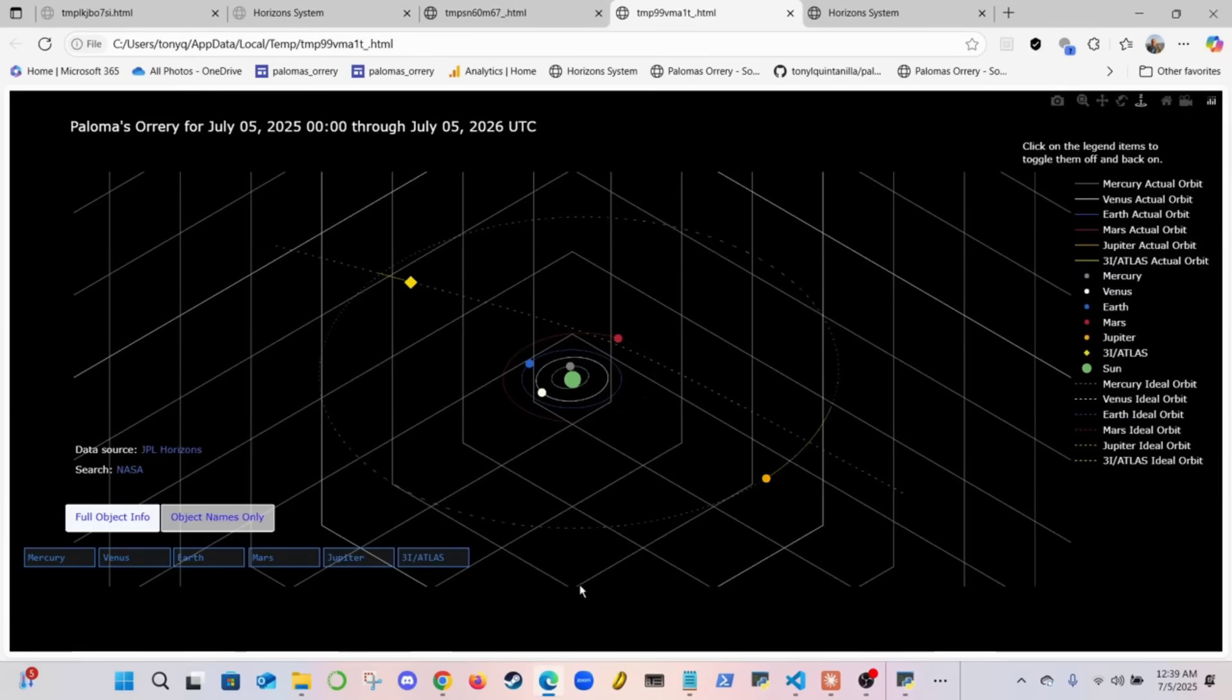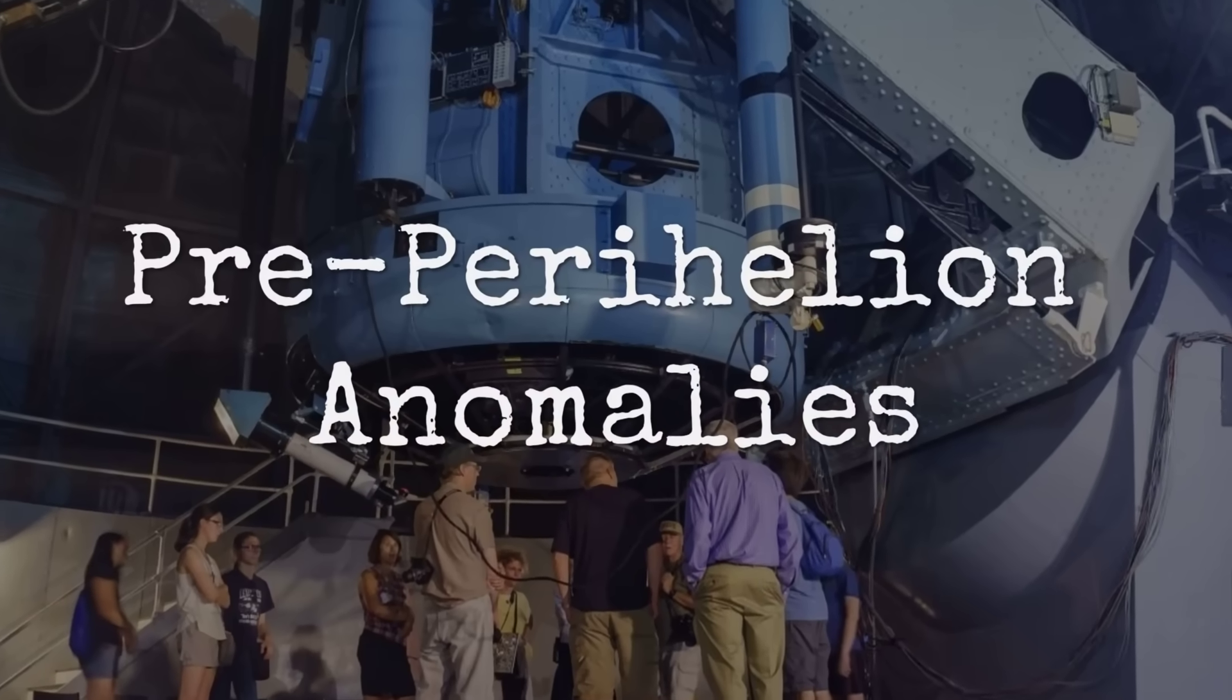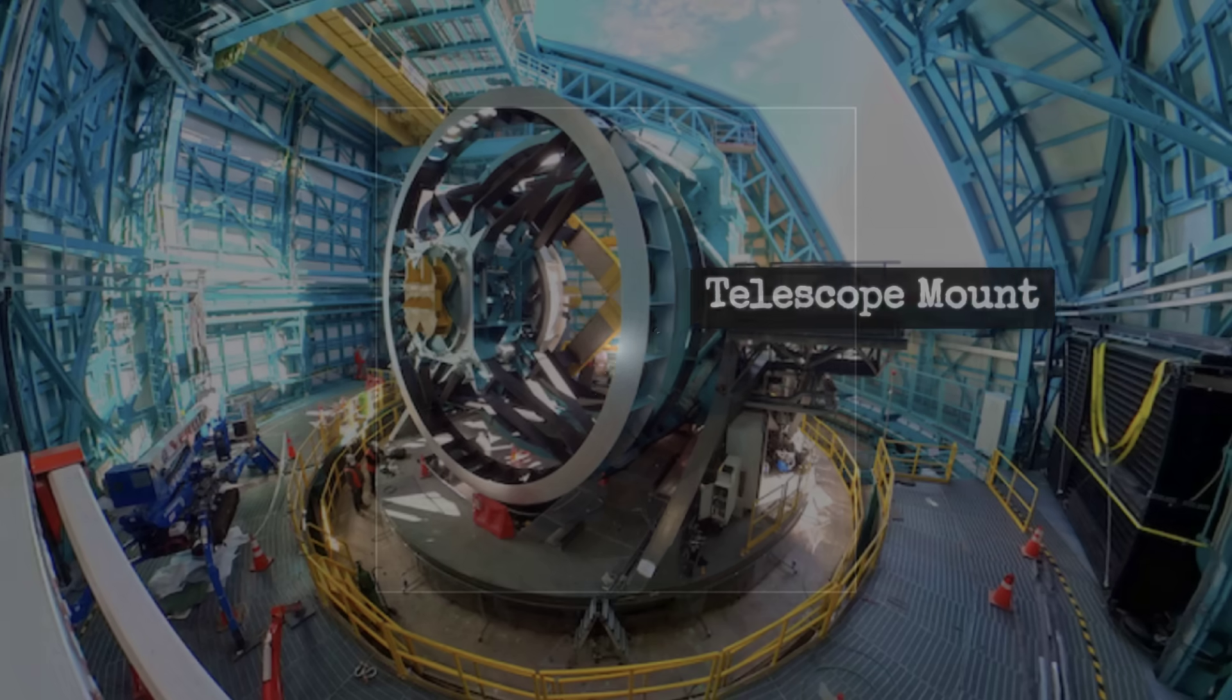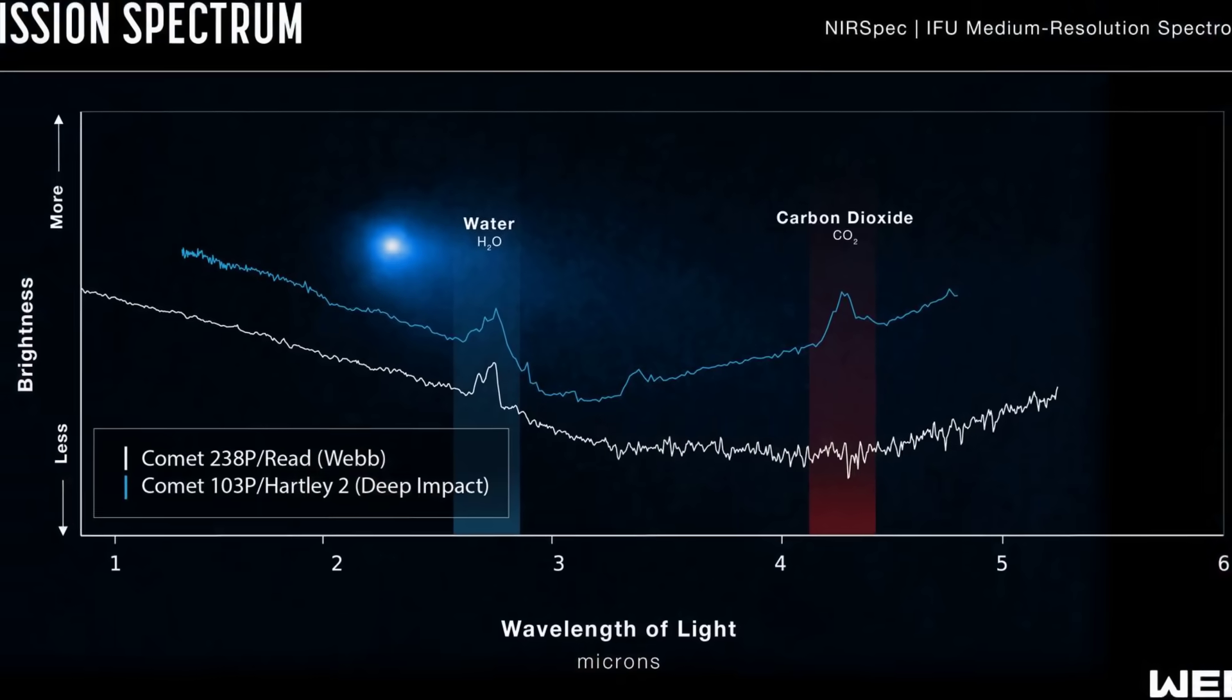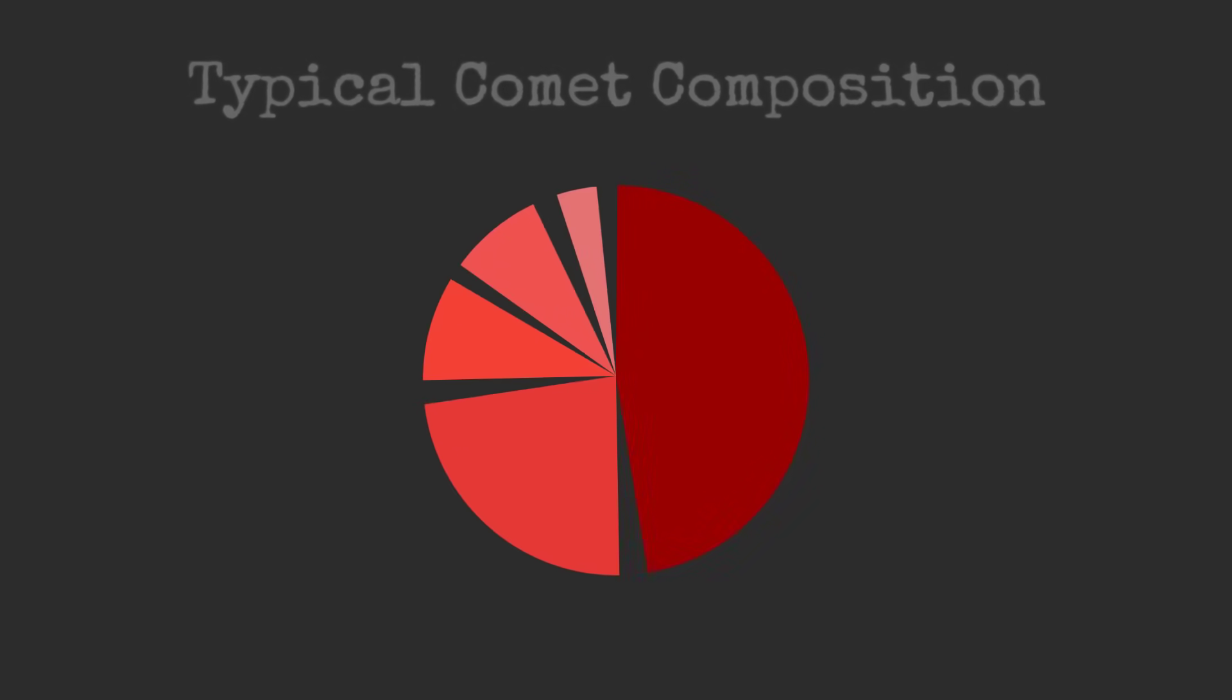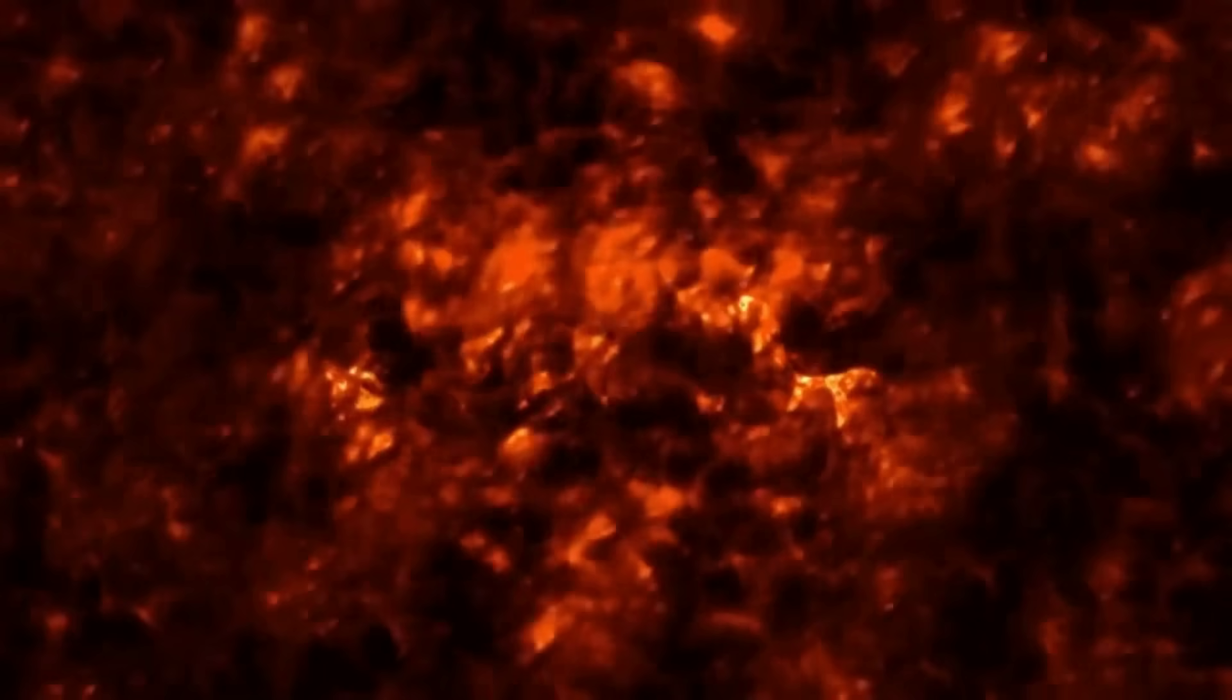This tells us that as it gets closer to the sun, solar radiation is causing increased outgassing and activity. Here we have spectroscopic analysis showing the composition of 3I/Atlas's coma. That's the cloud of gas and dust surrounding it. The dominant signature we see is carbon dioxide, shown by these strong emission lines at specific wavelengths. This is unusual, because most comets from our solar system show a mix of water-ice, carbon dioxide, and other volatiles. 3I/Atlas appears to be predominantly carbon dioxide, suggesting a different formation environment.